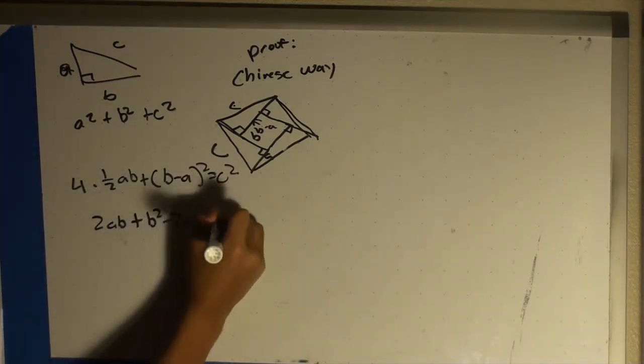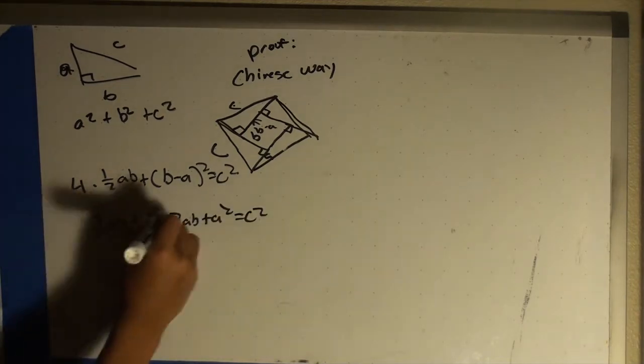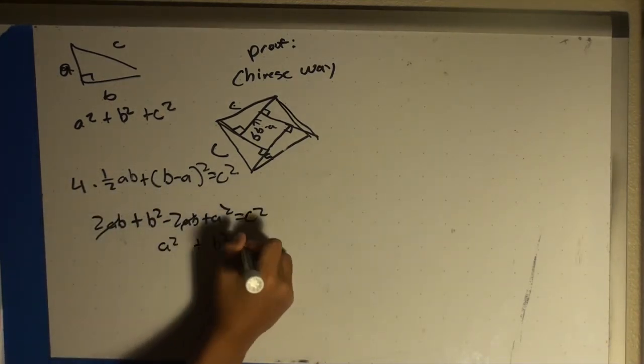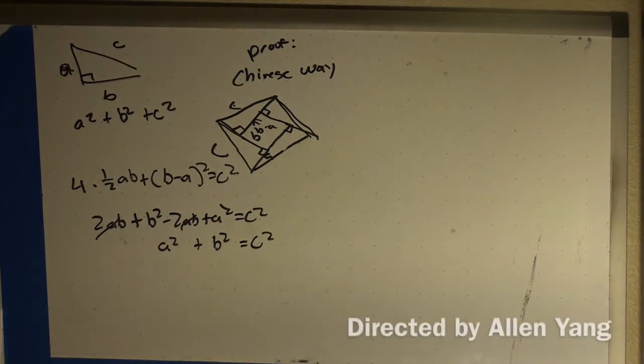And then that expands to 2ab plus b squared minus 2ab plus a squared, which equals a squared plus b squared equals c squared.